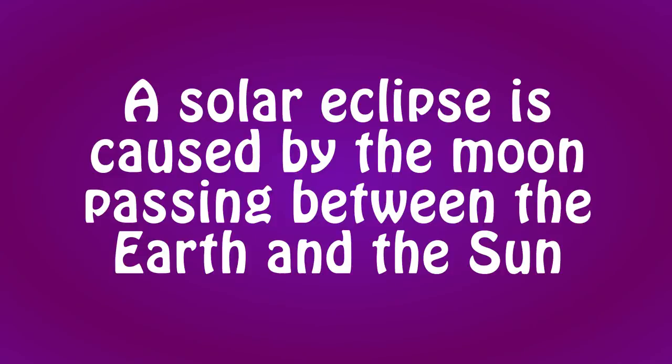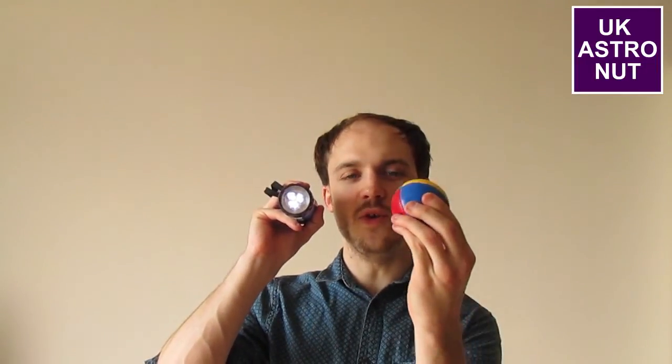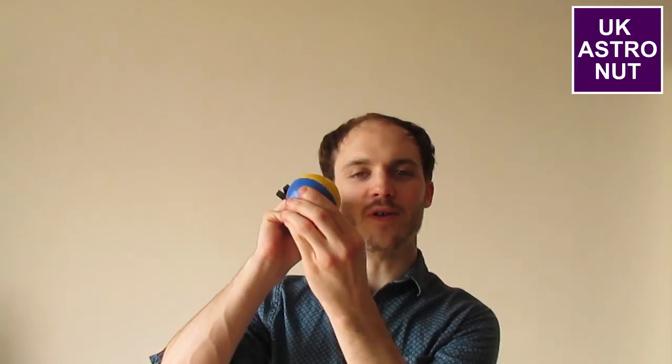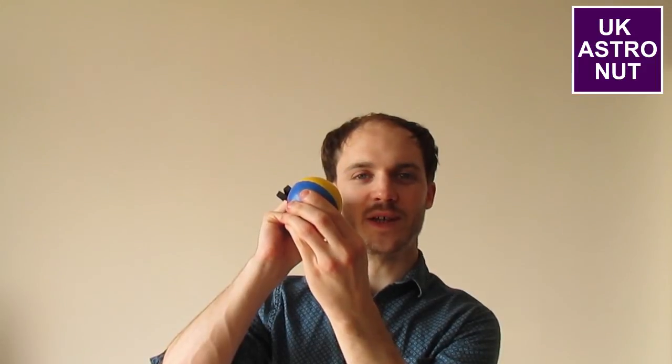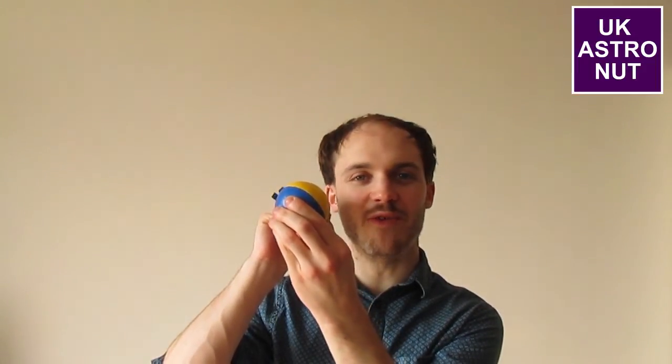So what causes a solar eclipse? A solar eclipse is caused when the moon passes between the Earth and the Sun, and so the moon blocks the light from the Sun reaching us down here on Earth. Imagine you're on Earth and you're looking up at the Sun. As the moon passes in between you and the Sun, you'll see that it blocks the light from the Sun, and so you don't see any of it — and this is what a solar eclipse is.